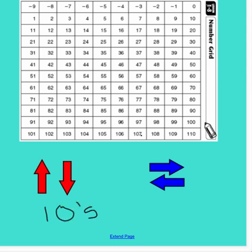The blue arrows show us that if we go right or if we go left, we are counting up or down by ones on a number grid.